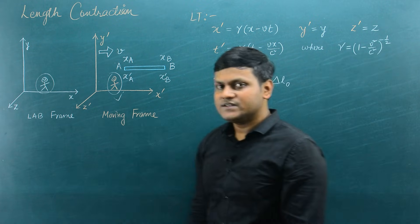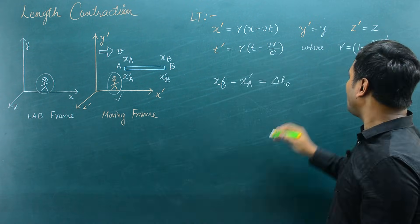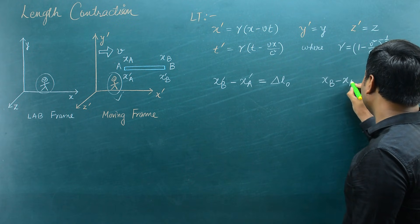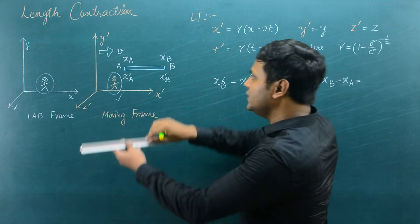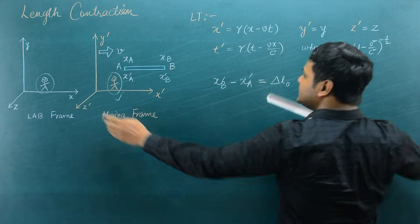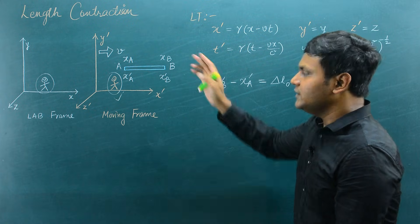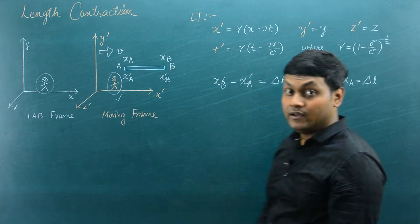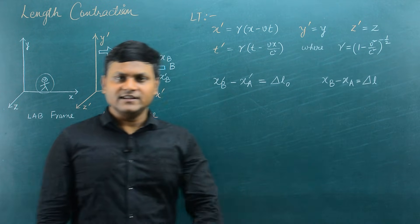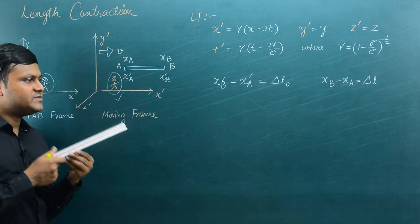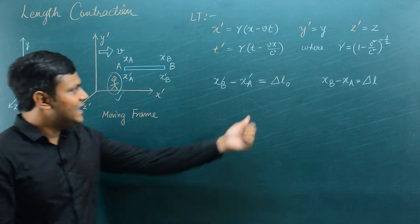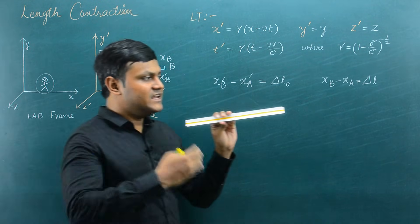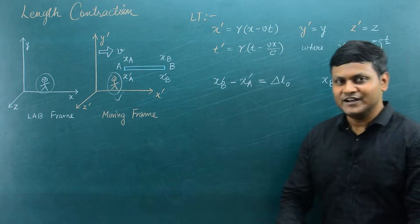So X_B' minus X_A' refers to the rest length or proper length, which I'm going to refer to as ΔL₀. What about the other person? For him, the rod is in relative motion. The length of the rod for this observer is X_B minus X_A, which is the relativistic length, referred to as ΔL. So ΔL is the relativistic length measured by an observer with respect to which the rod is in relative motion, and ΔL₀ is the proper length measured by a person at rest with respect to the rod.